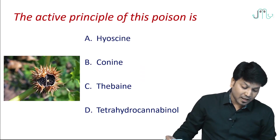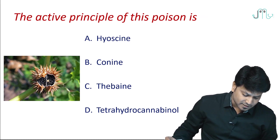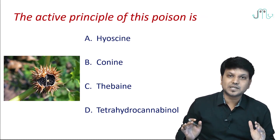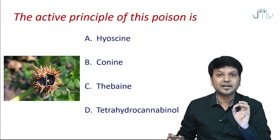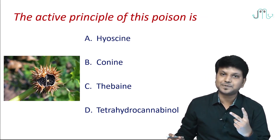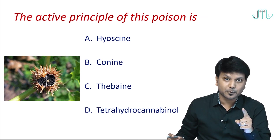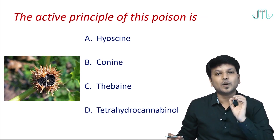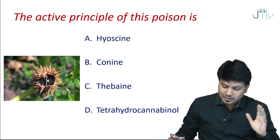The first question is about the active principle of a poison. Nowadays you get questions like this where you are given an image and need to identify the active principles. There are two steps: one is to identify the poison properly, and the second is to identify the active principle properly.